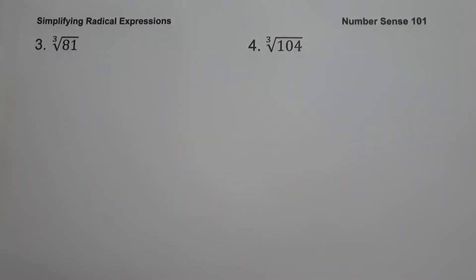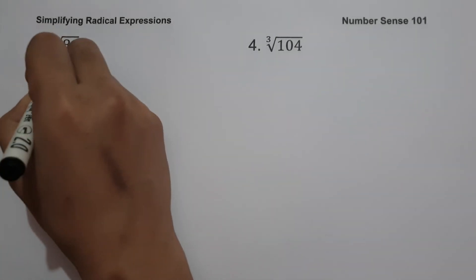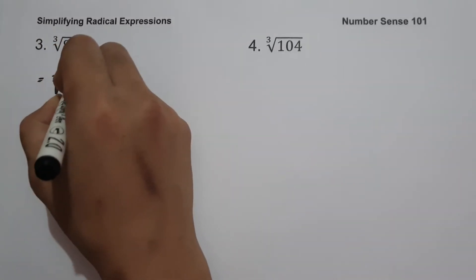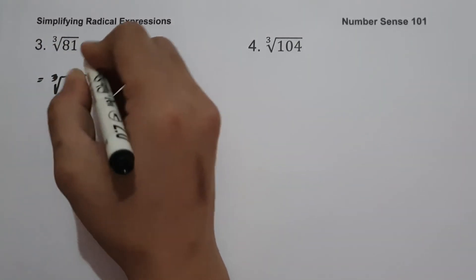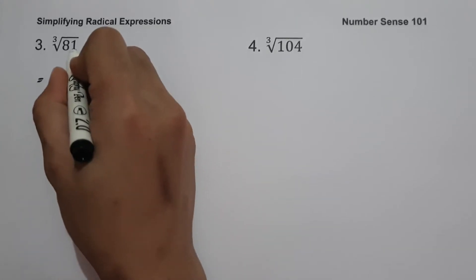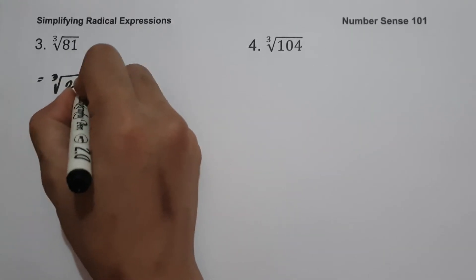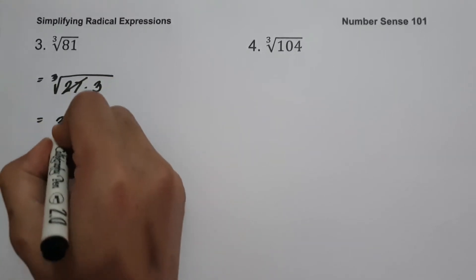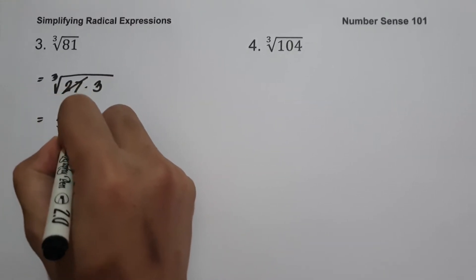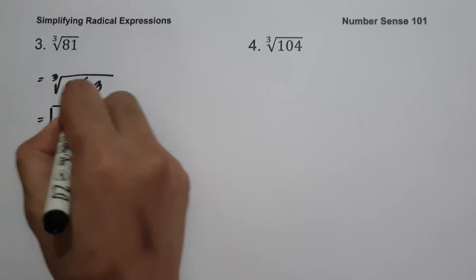On example number 3, we have cube root of 81. This time our index is 3 and our radicand is not a perfect cube. To simplify the cube root of 81 we are going to find two factors where one of the factors is a perfect cube. The factors of 81 are 27 and 3. 27 multiplied by 3 is 81, and the cube root of 27 is 3. Therefore we are going to have 3 cube root of 3, and this will be our answer.